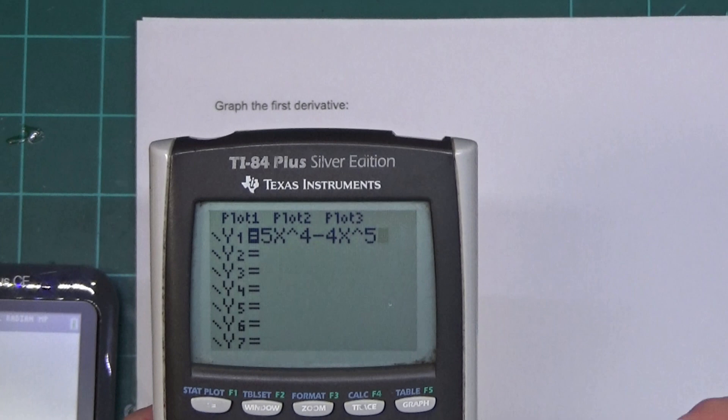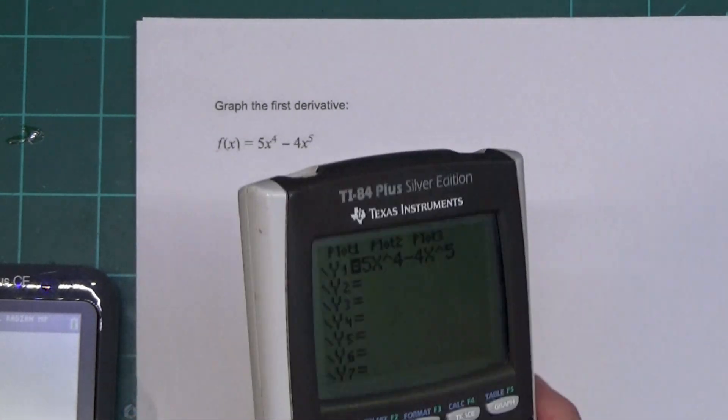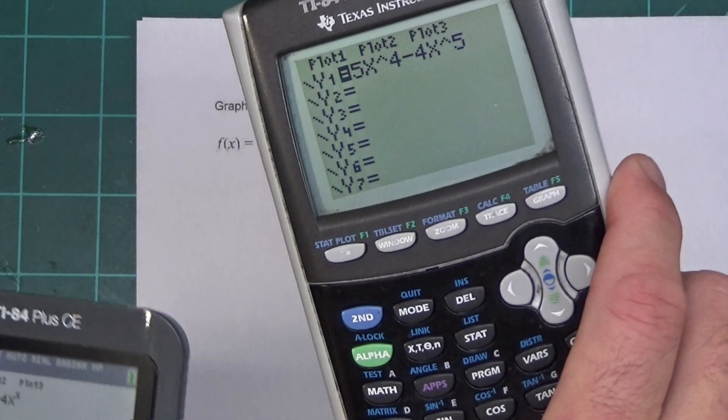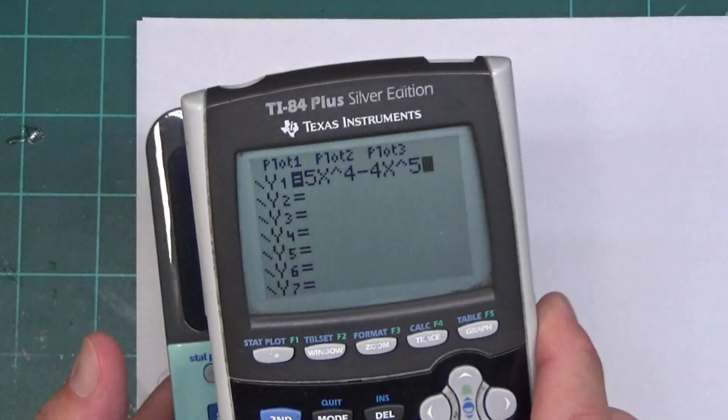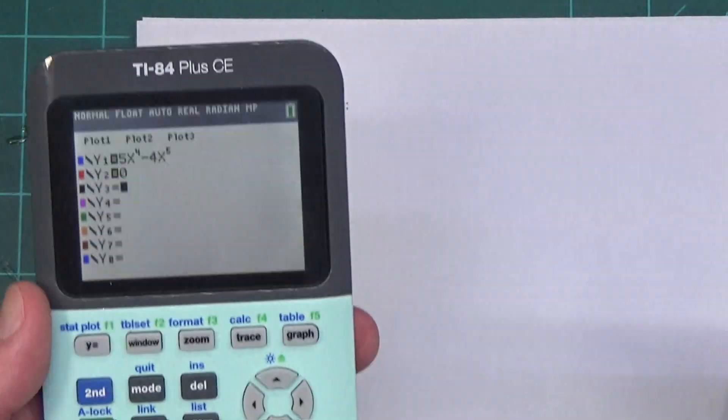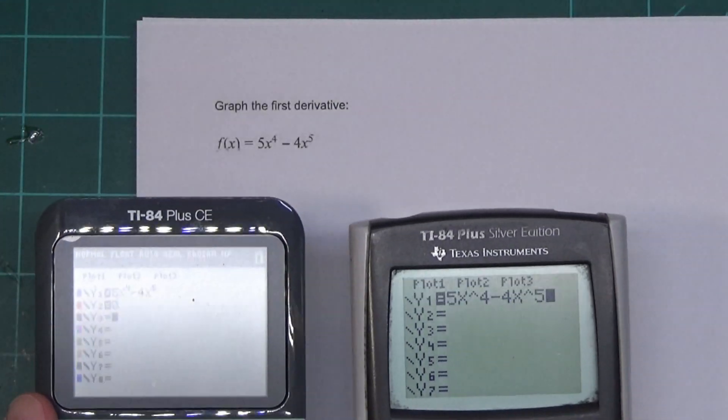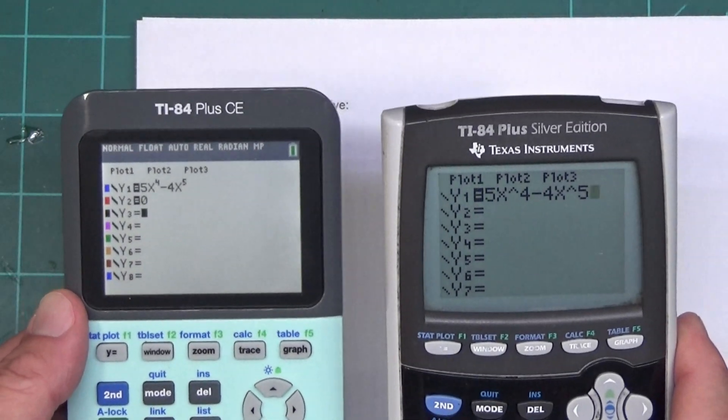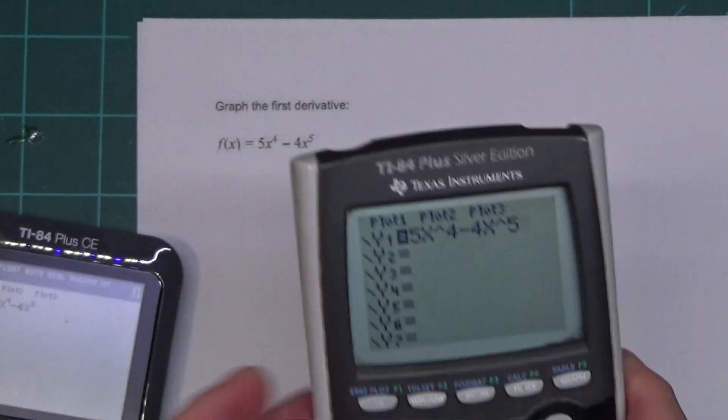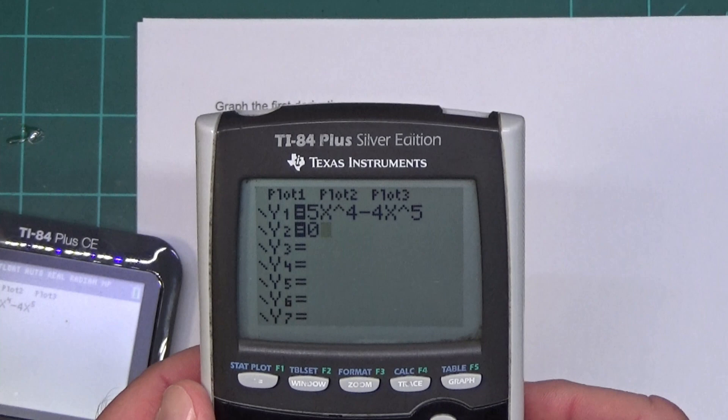We're going to type in 5x to the 4th minus 4x to the 5th. I don't have to push the arrow buttons to get out of the exponents because this one isn't beautiful. You got speed and you got beauty. You can make your choice. This one's going to graph quicker than this one. In fact, I think I'll put them side by side and press graph at the same time so we can see this. I'm going to go ahead and put the 0 in here.